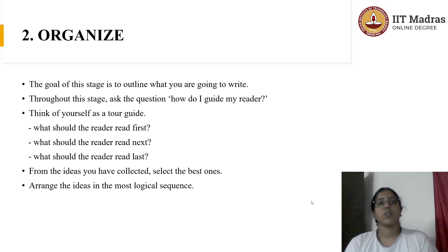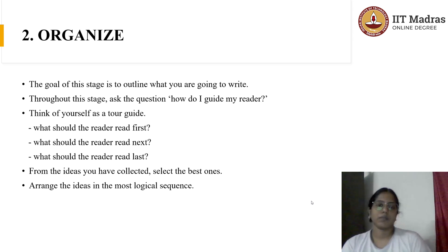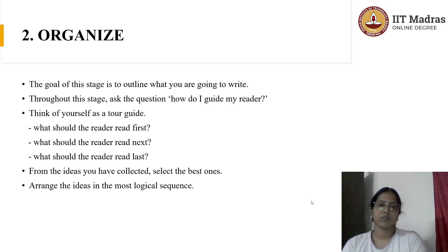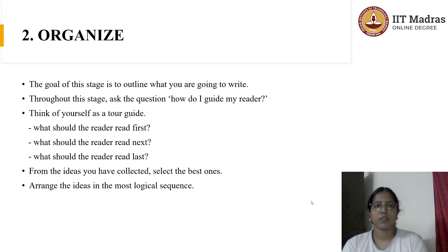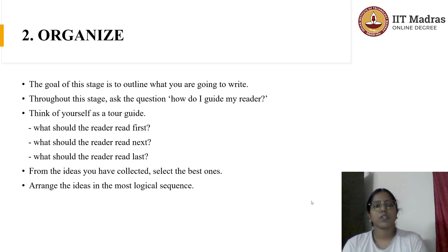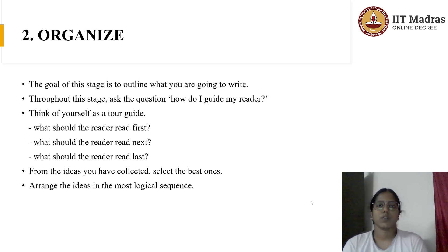The next stage is known as Organizing. In this stage, you need to outline what you're going to write. Throughout this stage, it is very important to ask yourself: how am I going to guide my reader? Think of yourself as a tour guide — you would want the tourist to visit place A, followed by place B, then place C, and finally conclude with something interesting. Ask yourself: what should your reader read first, what should they read next, and what should they read last? Your ideas need to be organized properly and thoroughly.